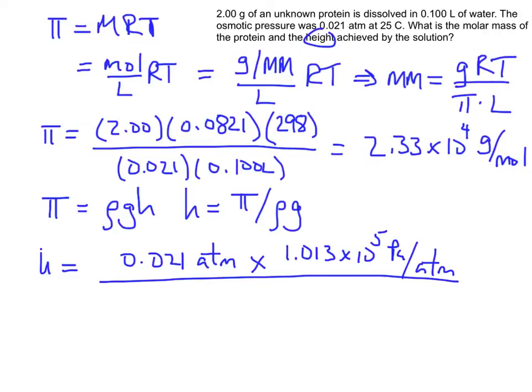So to find the density, I need the mass divided by the volume. And the mass of my solution is the 0.1 liters of the water, also known as 100 grams of water, plus the 2 grams of the protein. So I have 102 grams of the solution. I'm going to divide that by the volume of the solution, which is 0.1 liters or 100 cubic centimeters.